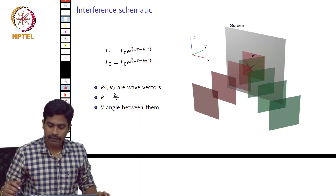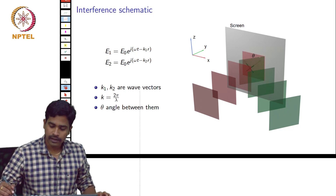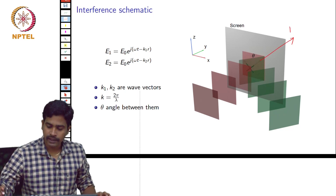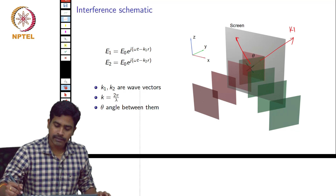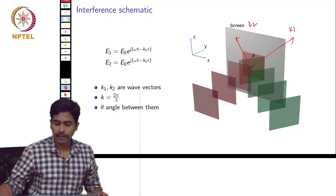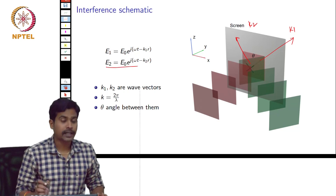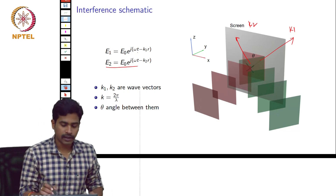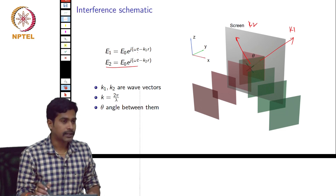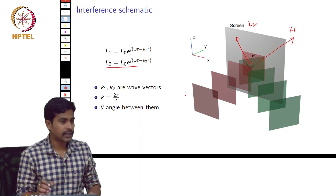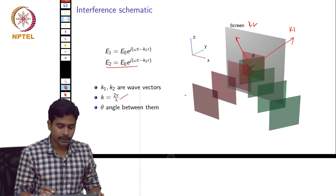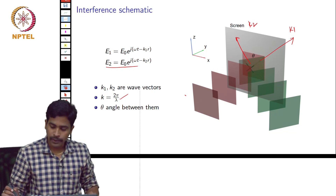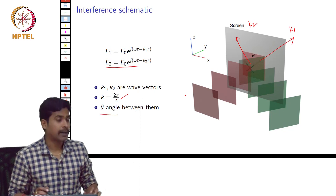In this figure there are 2 plane waves travelling in 2 different directions. The red one is travelling in this direction and its wave vector is given by k1, and the other plane wave shown in green color is travelling in this direction and its wave vector is given by k2. These are the expressions for the electric fields of these 2 plane waves, where E1 is E0 e to the power j(ωt − k1·r). Similarly, E2 is E0 e to the power j(ωt − k2·r). The magnitude of the wave vector is given by 2π/λ, and we are assuming the angle between these 2 plane waves is some random angle theta.